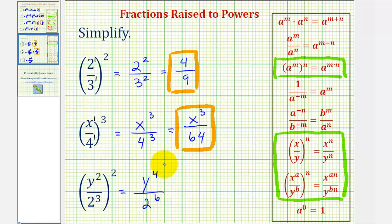Again, we can't simplify y to the fourth, because we don't know the value of y. But we can simplify two to the sixth. That's equal to 64.